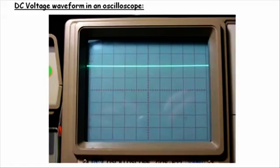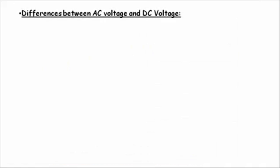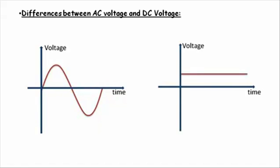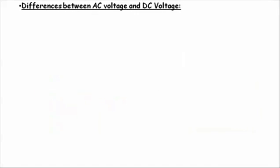Now that we have understood that there exists two different types of voltages, let us also see the major differences. One difference that we have already observed is the difference in their waveforms: that the AC voltage waveform is a sine wave and the DC voltage waveform is a straight line.